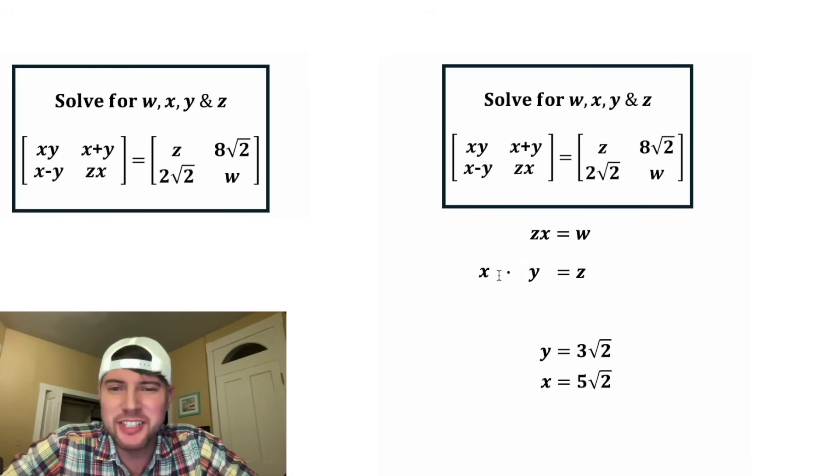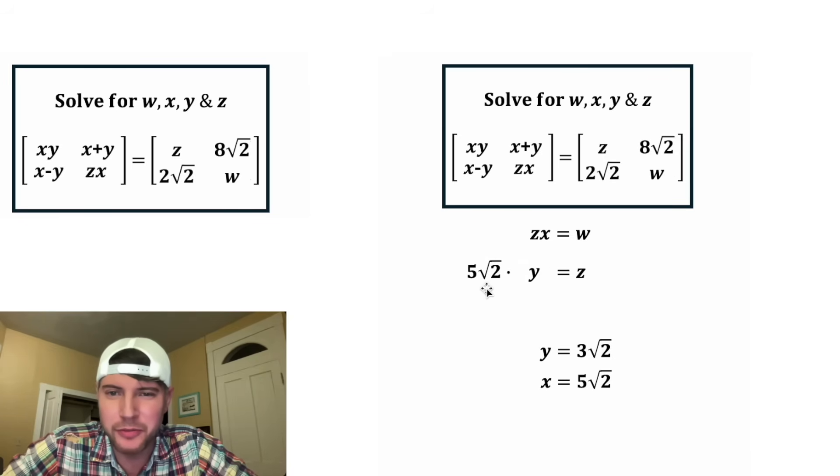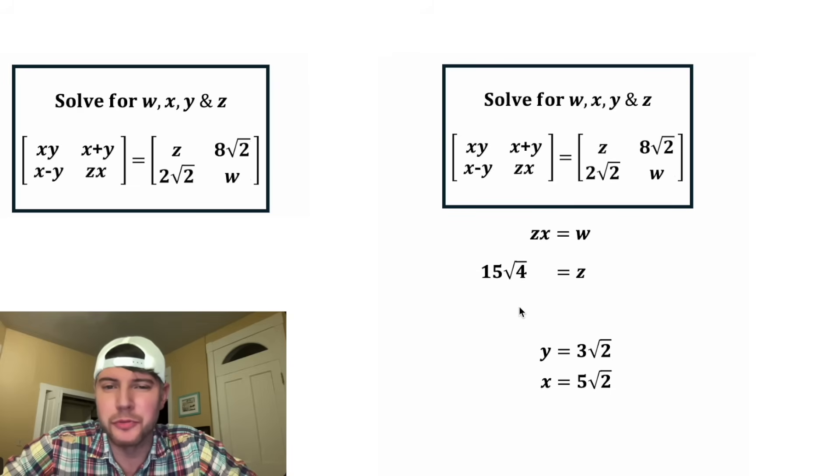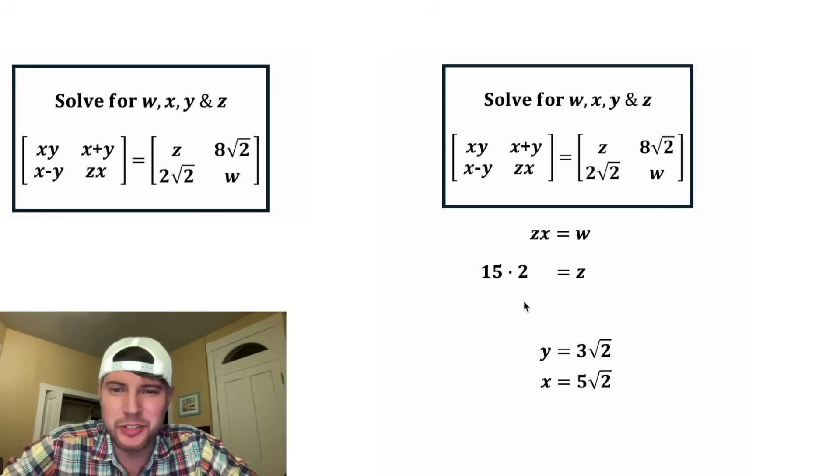Now we have everything we need to solve for z. In place of x, we substitute 5 root 2, and in place of y, we substitute 3 root 2. We can rearrange things thanks to the commutative property of multiplication. 5 times 3 equals 15, and root 2 times root 2 is root 4, which equals 2. So 15 times 2 is 30, and z equals 30.